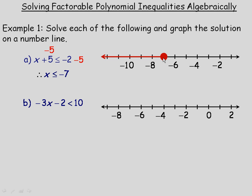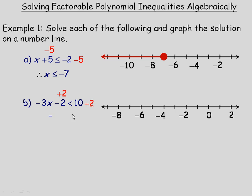An open circle means we don't include that number, but we include all numbers to the left or right depending on the direction of the inequality. For part b, we're asked to solve negative 3x minus 2 is less than 10. We isolate negative 3x first by adding 2 to both sides, leaving negative 3x is less than 12.